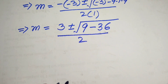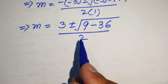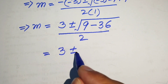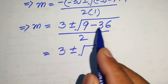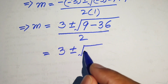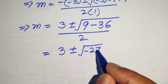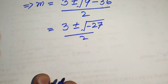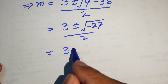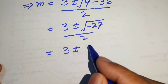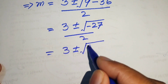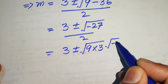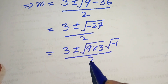We simplify the discriminant: 9 minus 36 equals minus 27. So we have m equals 3 plus or minus the square root of minus 27, divided by 2. We rewrite minus 27 as 9 times 3, and separate out the square root of minus 1.